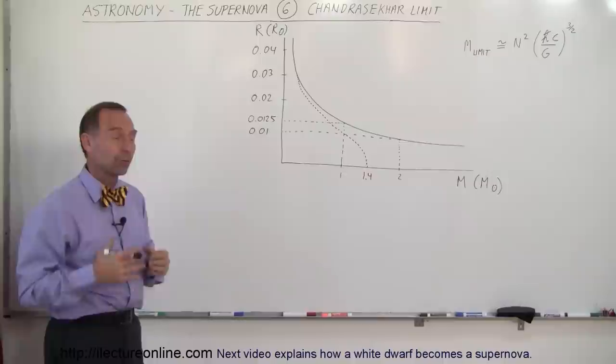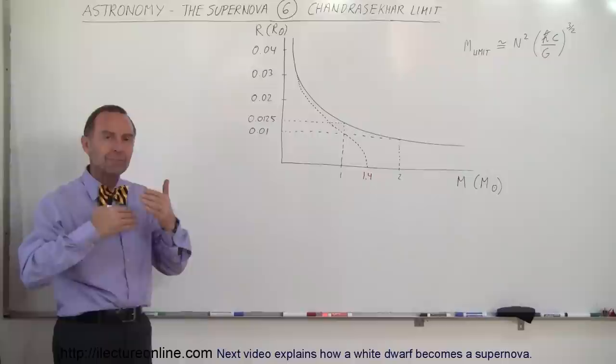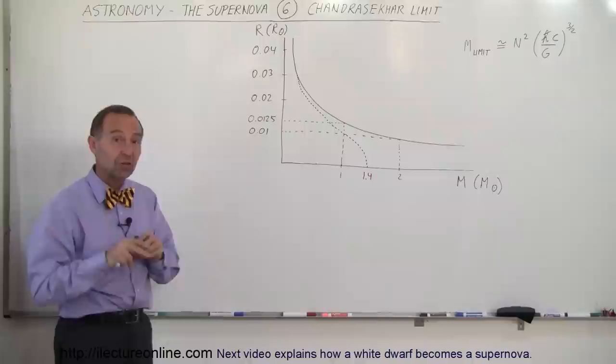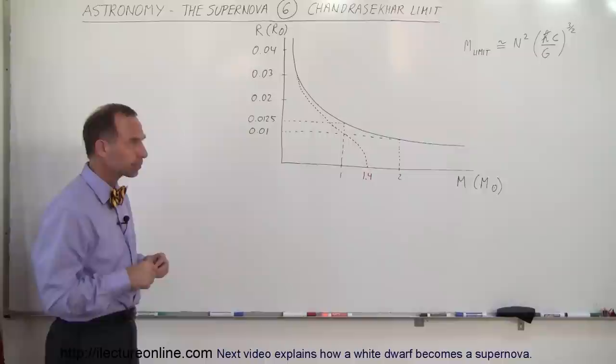But they realized that there must be an upper limit, because eventually it may exceed the ability for this degeneracy pressure to hold back the gravitational force. They just didn't know what level or what mass this would occur.